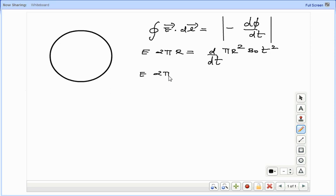We have E times 2 pi r equal to pi r square times B naught into 2t, which implies that E is B naught rt.